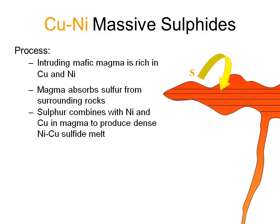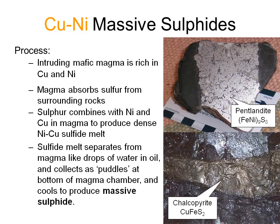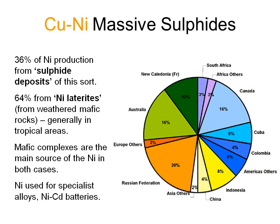The sulphur, nickel and copper combine in the magma to form an immiscible copper-nickel sulphide melt that is heavier than the rest of the magma, and it collects in pools at the bottom of the magma chamber, like water droplets in oil. Platinum group metals are also sometimes concentrated in this immiscible melt. As the magma chamber continues to cool, both the sulphides and the remaining magma crystallize. The main sulphide minerals are pentlandite, which is an iron-nickel sulphide, and chalcopyrite, which is a copper-iron sulphide.